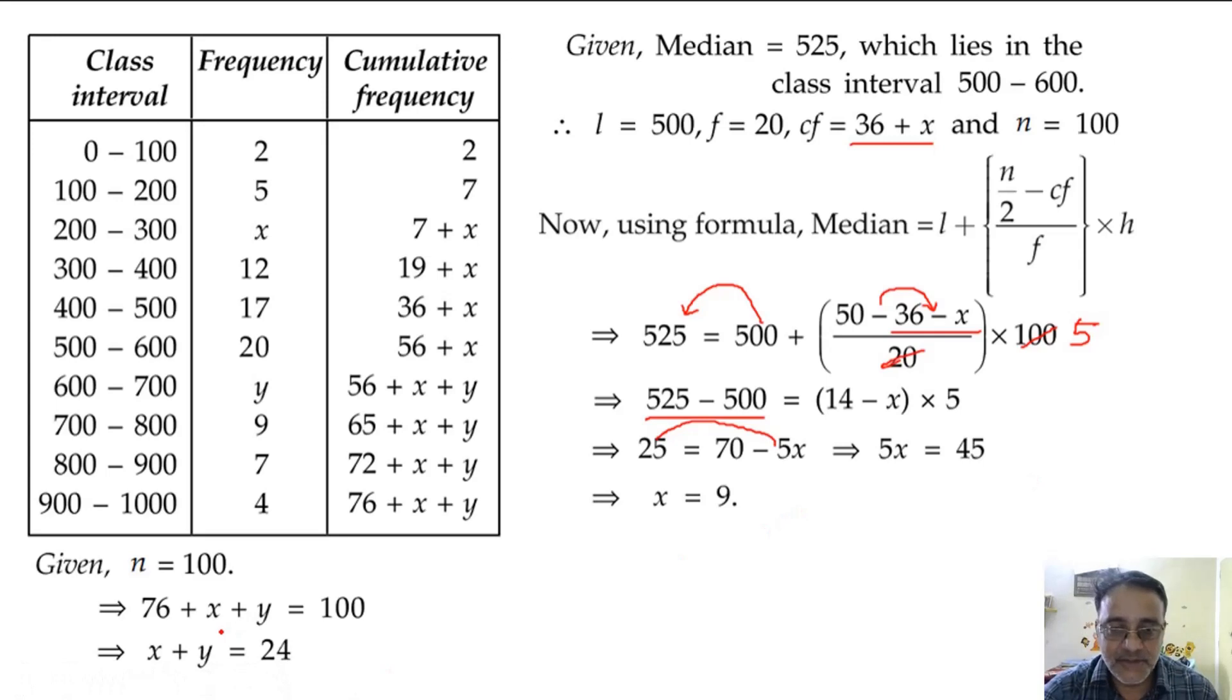And now we will substitute here, so 9 plus y is equal to 24, so y is equal to 24 minus 9. So what is the value of y? 15. So hence x is equal to 9 and y is equal to 15. Any doubt in this question? No sir. Dono method is easier, ye bhi easier, wo bhi easier.